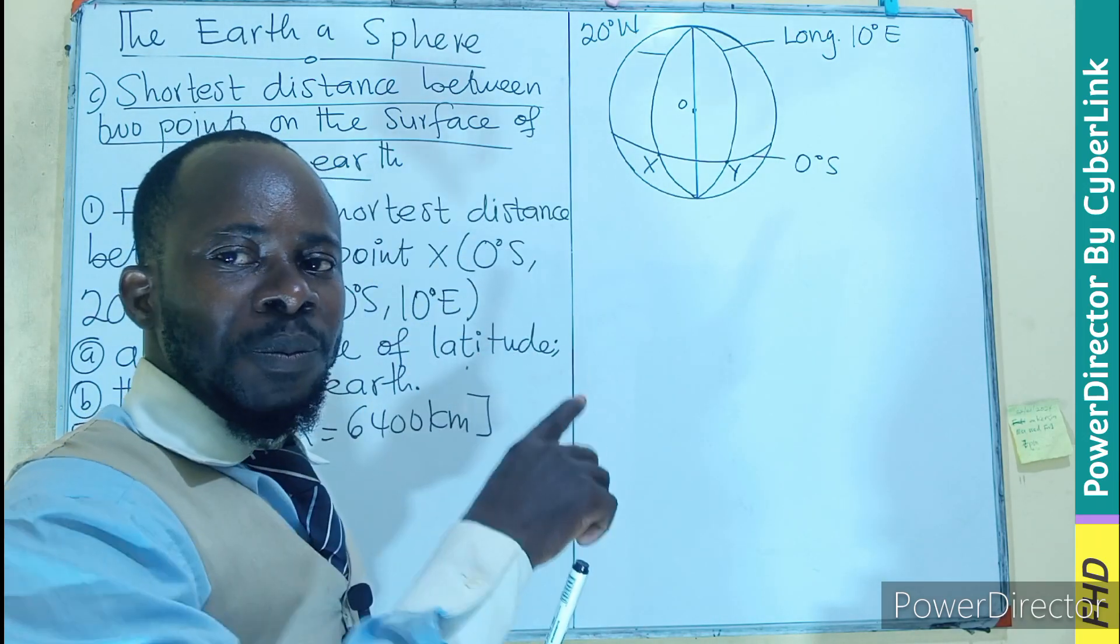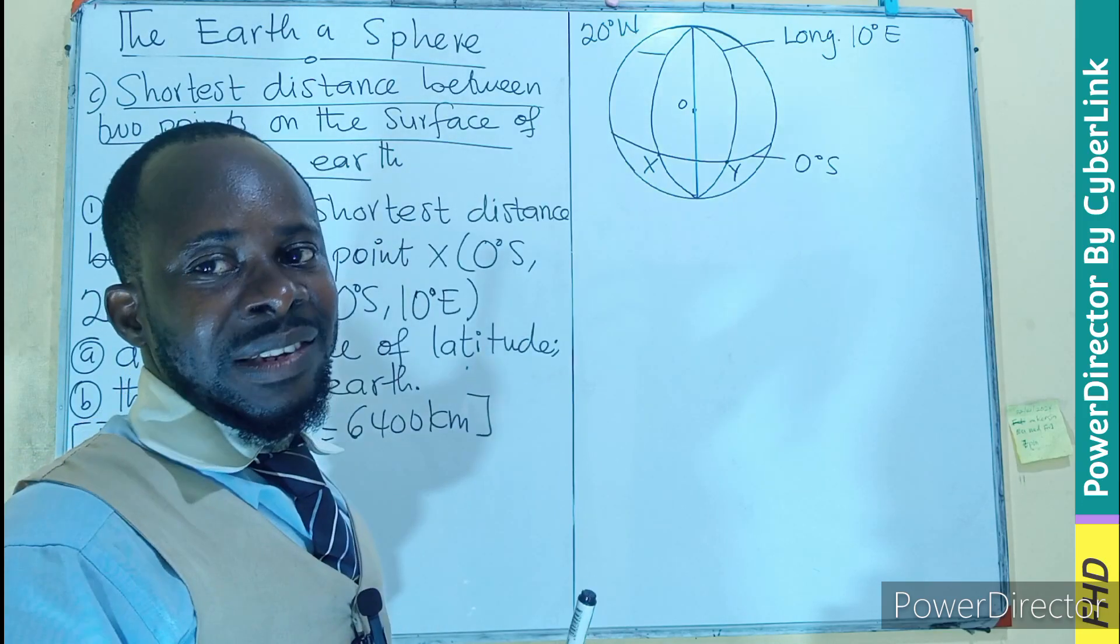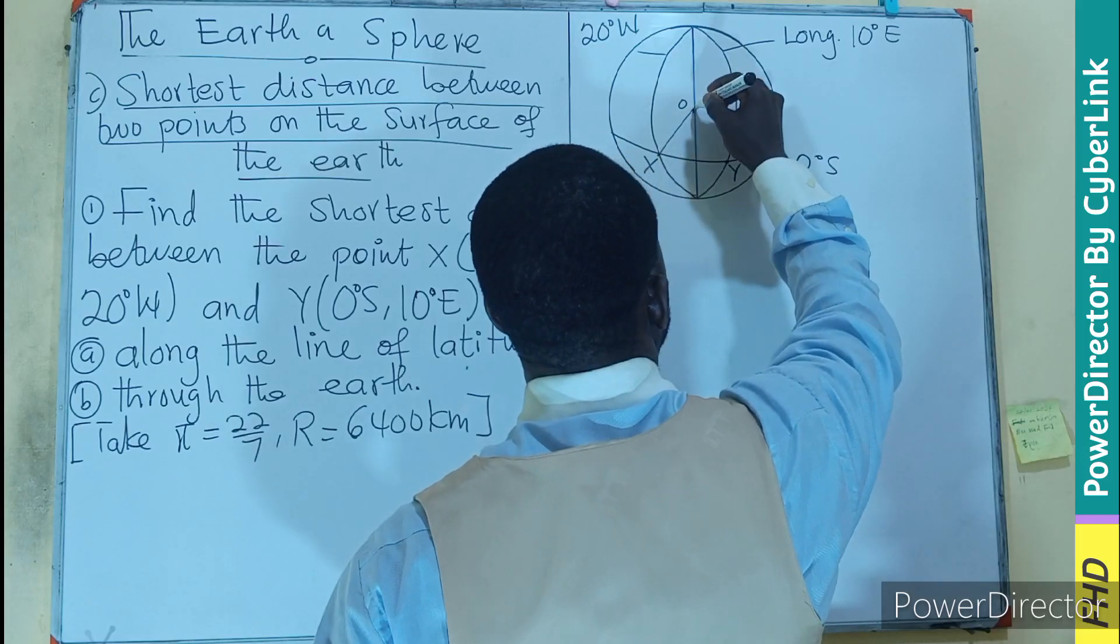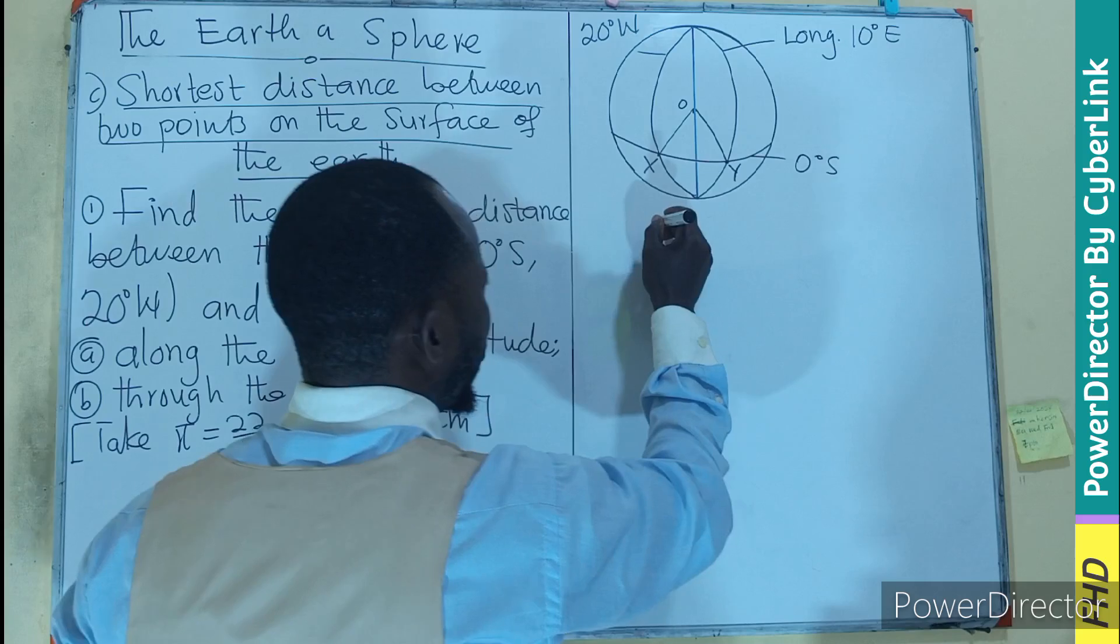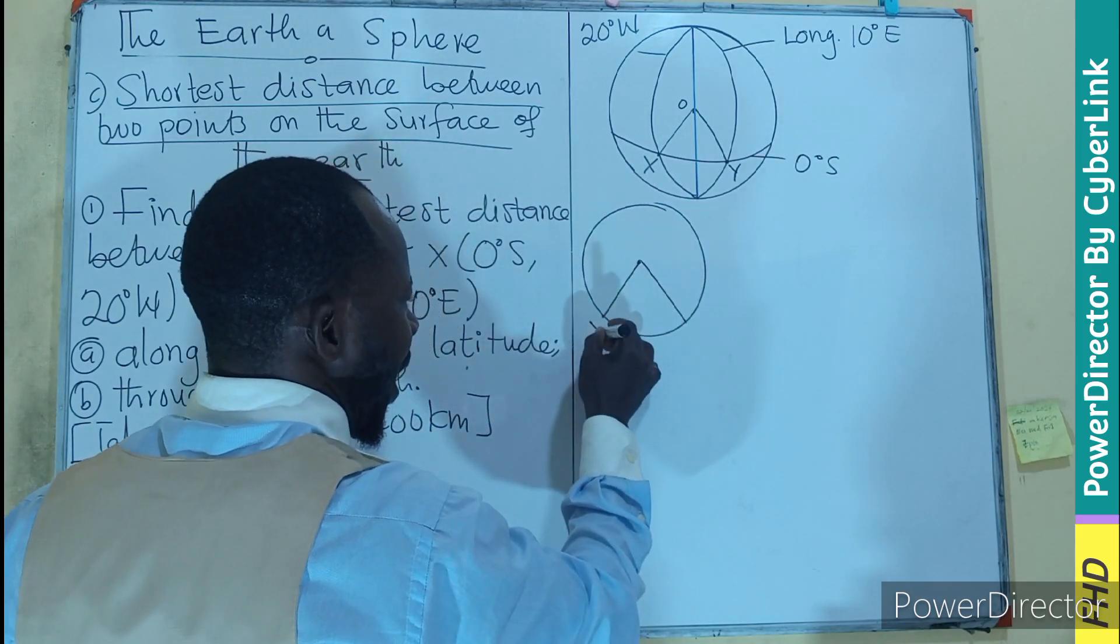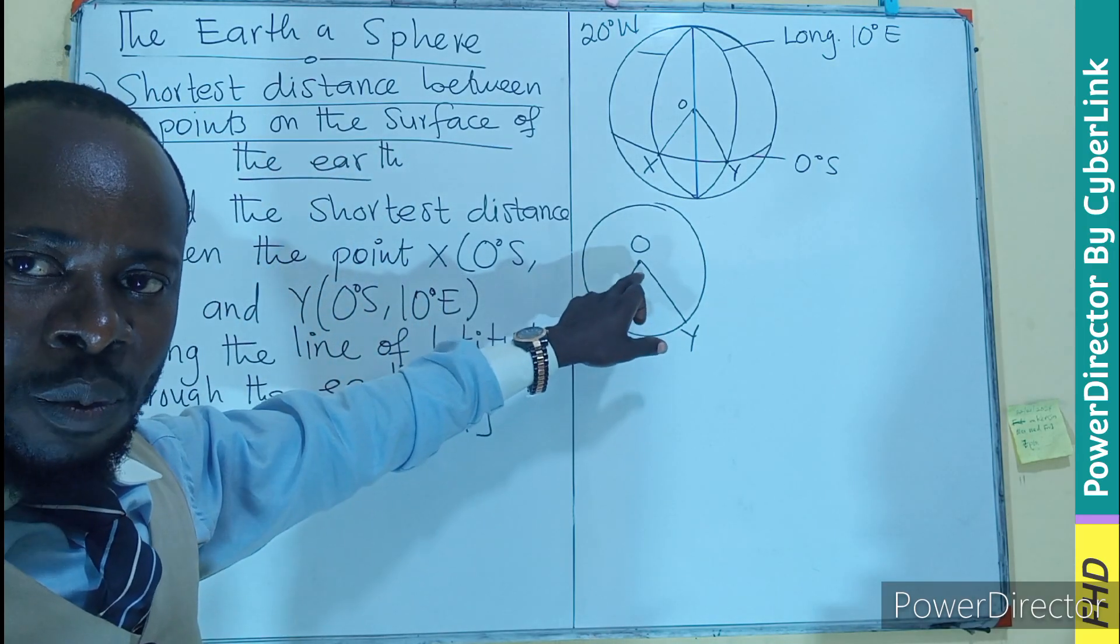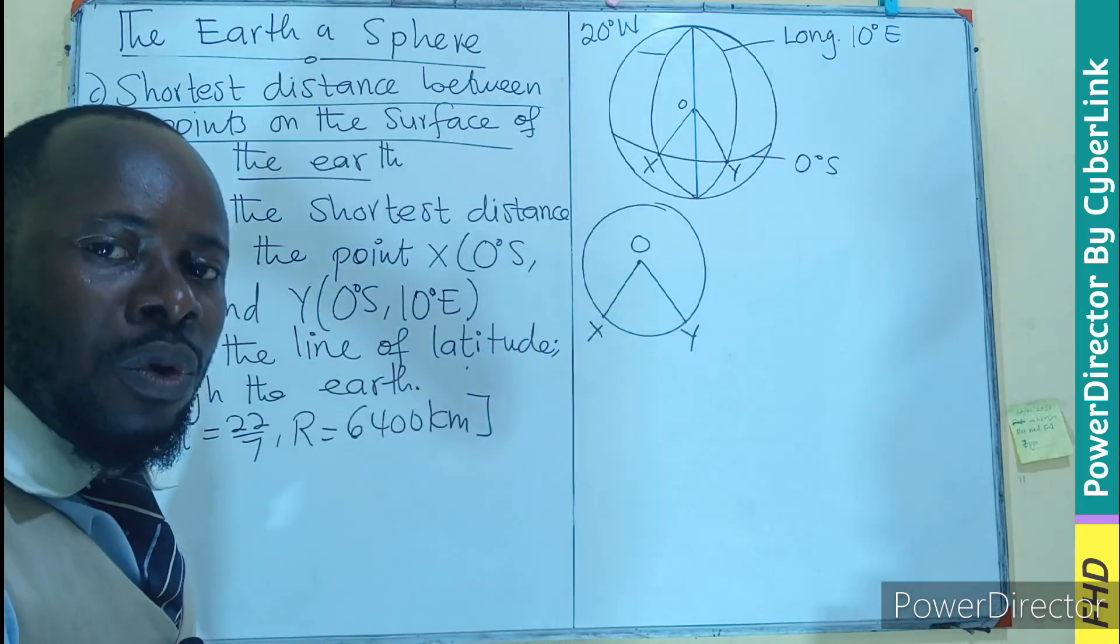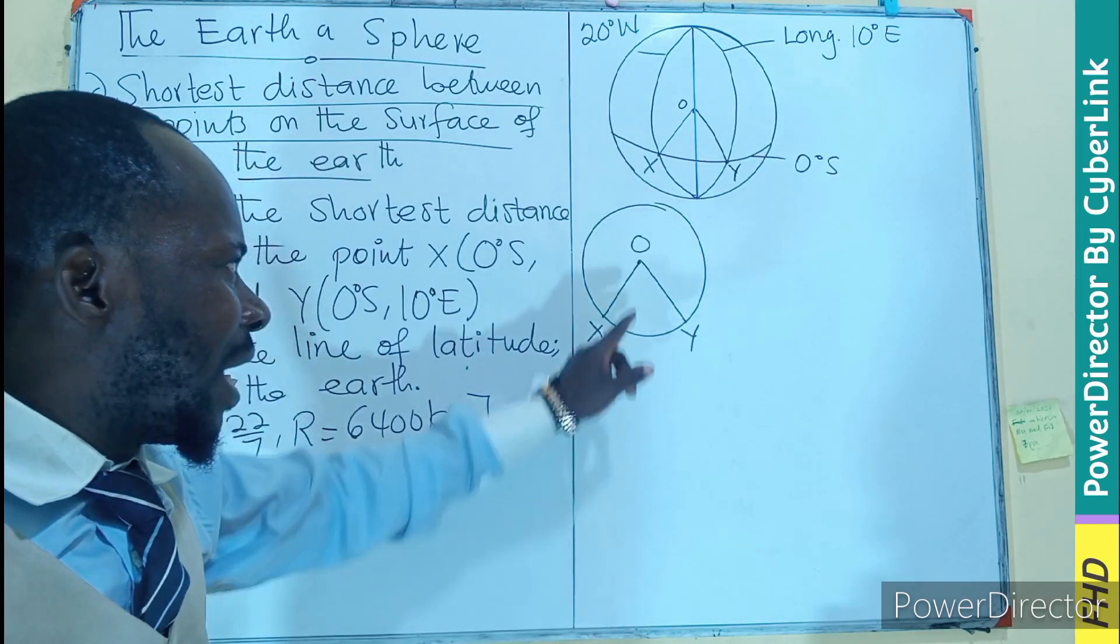The radius of the circle formed by the equator is going to be the same as the radius of the Earth. So in this case, we are looking for this distance. I can cut out this. X, O, Y. We are looking for the angle that will be formed here so that we can find a length.